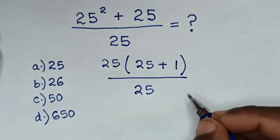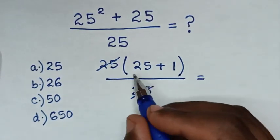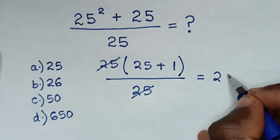Then to simplify, this 25 will cancel this 25, so it will be equal to 25 plus 1 is 26.